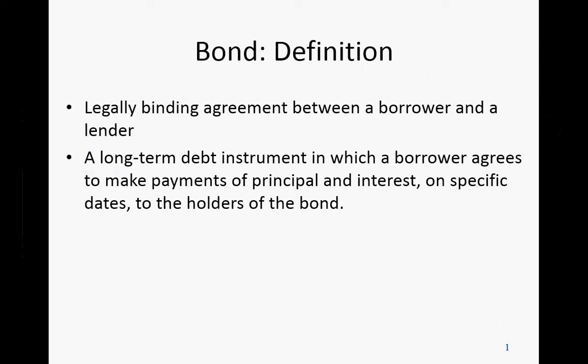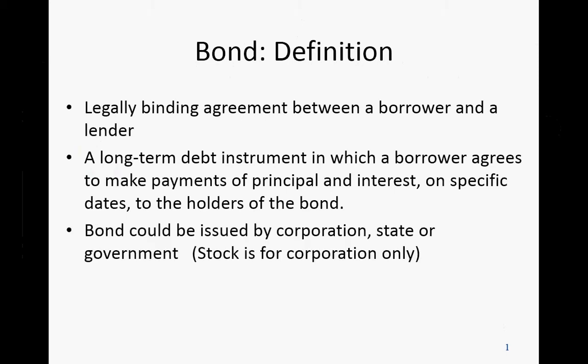Bond refers to long-term debt — it's not short-term. If it is short-term, it will be called notes. A bond is a long-term debt instrument in which a borrower agrees to make payments of principal and interest on a specific date to the holder of the bond. The bond could be issued by a corporation, state, or government. If it's stock, it can only be issued by a corporation.